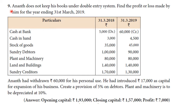Hello friends, welcome to our channel. In the next video, we are going to talk about Unit 1: Accounts from Incomplete Records, 11th standard. Anand does not keep his books under double entry. Find the profit or loss made by him for the year ending 31st March 2019.